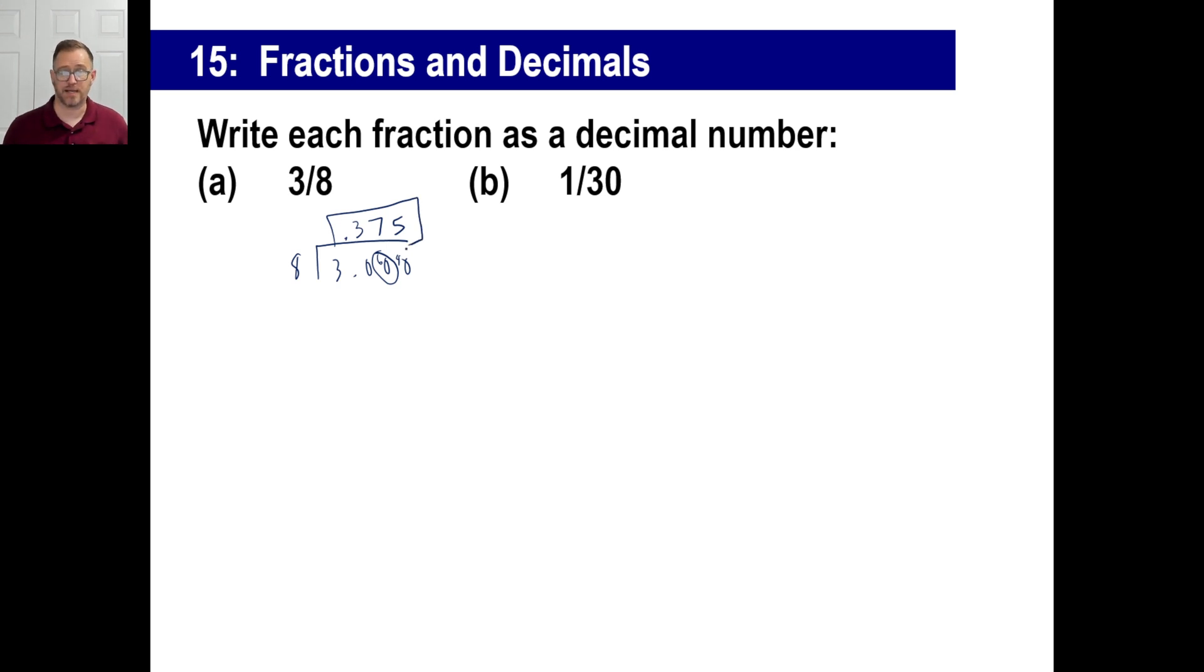There you go. There's your fraction, three-eighths, as a decimal, 0.375. One thirtieth? Okay. Well, we can do that. One divided by 30.